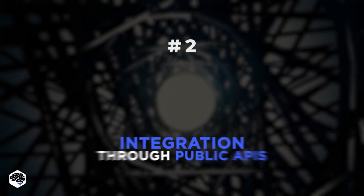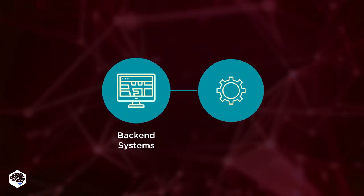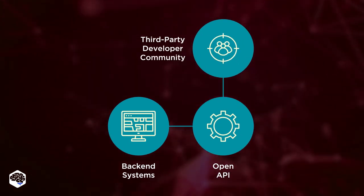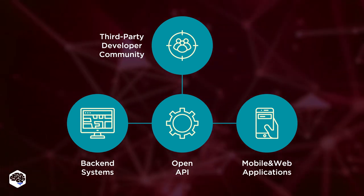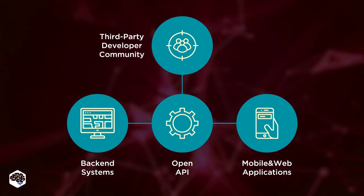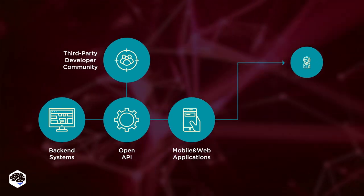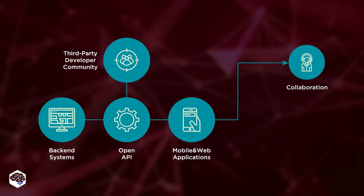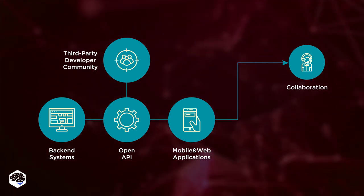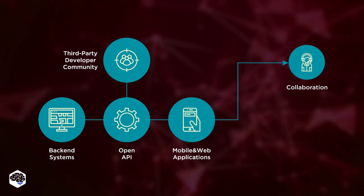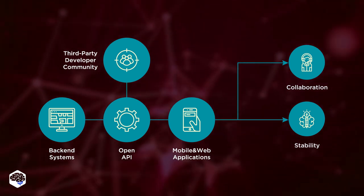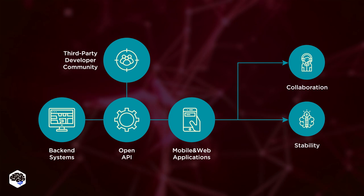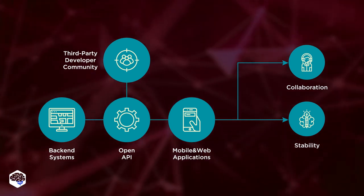The second use is integration through public APIs. A public API is a publicly available application programming interface that any developer can use to connect and share information through different services. Among the main benefits of integrating through public APIs, we define collaboration — utilizing public APIs offers the opportunity for extensive collaboration — and stability, considering that the foundation of most public APIs was built by tech prodigies, so it is safe to assume that your API functions will be stable.